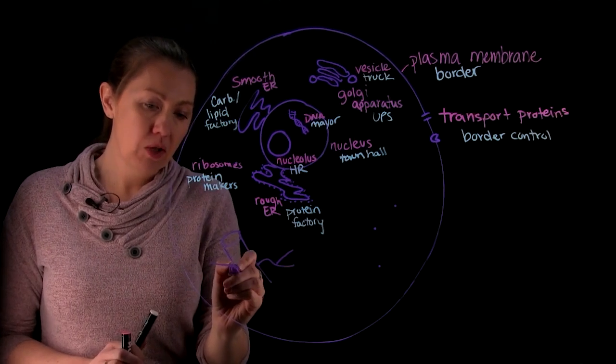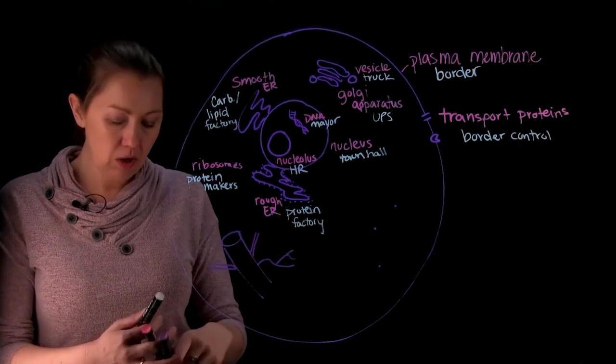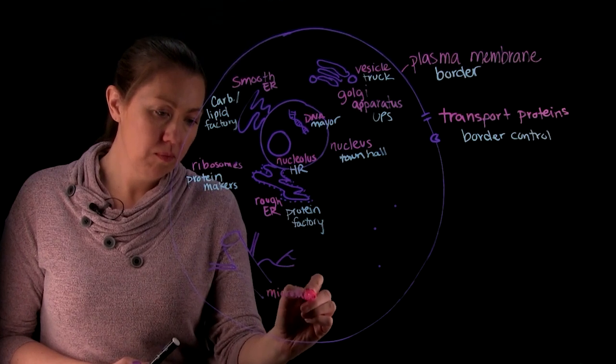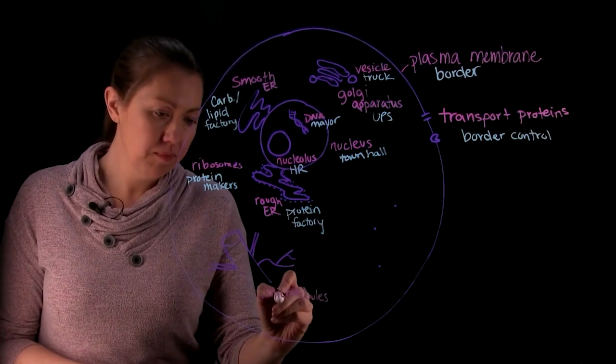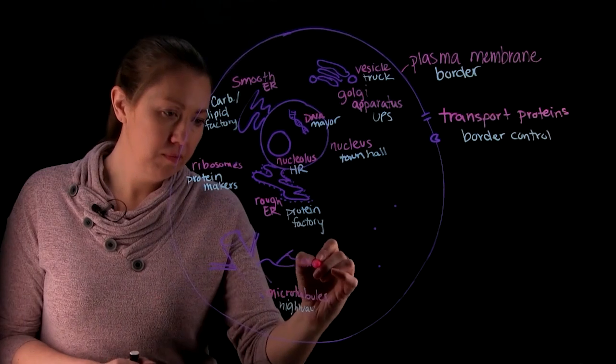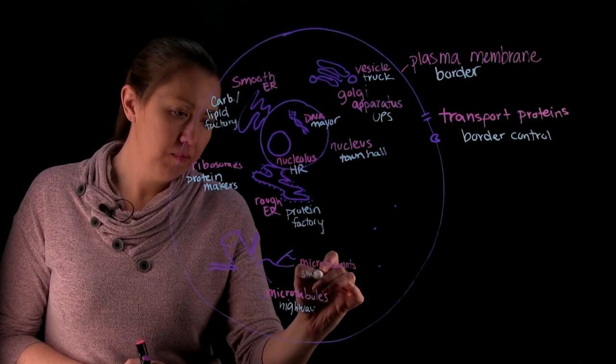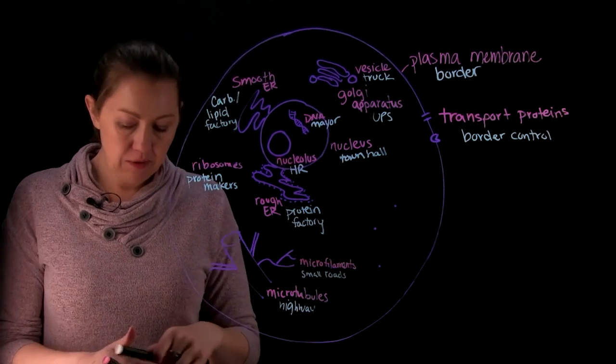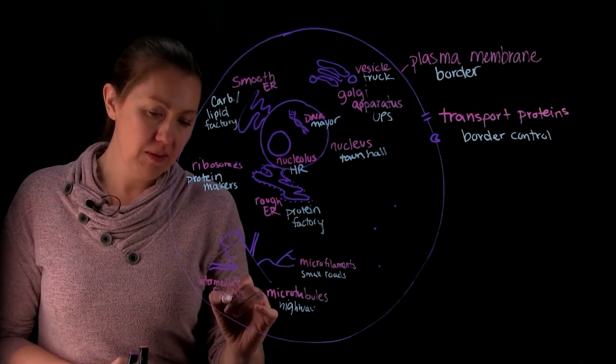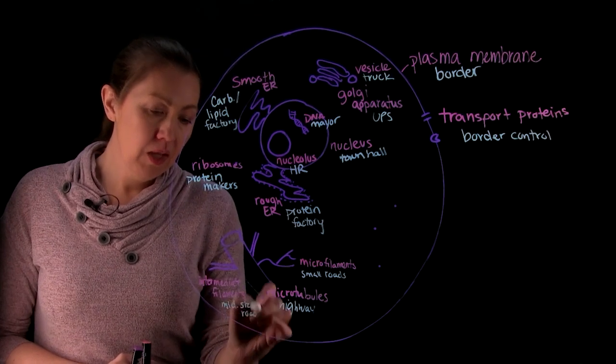And so these are actually going to collectively make up your cytoskeleton because it's also going to serve as your framework for the cell. So these little roads are going to be your microtubules for the big ones. So think of those as your highways. Your microfilaments are going to be your small ones. So these are tiny roads. And you have your intermediate filaments, which are kind of like the middle size. Which are going to be like the middle size roads.